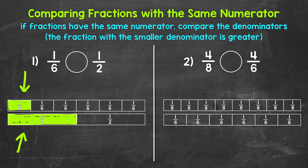Which fraction strip has more shaded in? Which fraction is greater? Well, we can see that one-half is greater. But how does that work? Because both fraction strips have one part shaded in — so how is one of these fractions greater than the other?